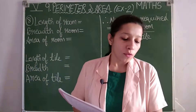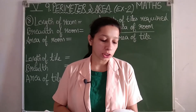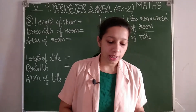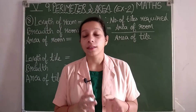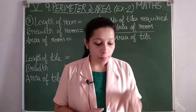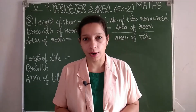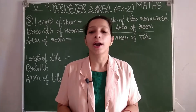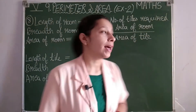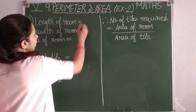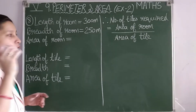Question number eight: find the number of tiles required to cover a room 300 meters long and 250 meters broad, if each tile is 5 meters long and 3 meters broad. The length and breadth of the room are given, and also the length and breadth of each tile. We need to find how many tiles are required to cover the floor. Length of room is 300 meters; breadth of room is 250 meters.